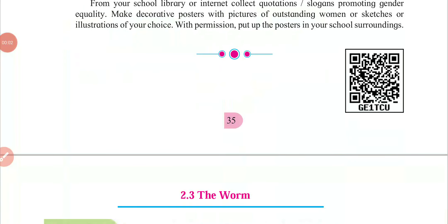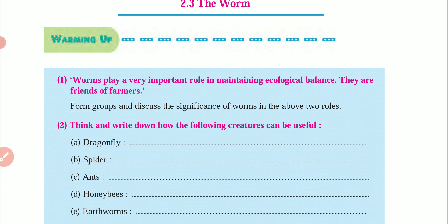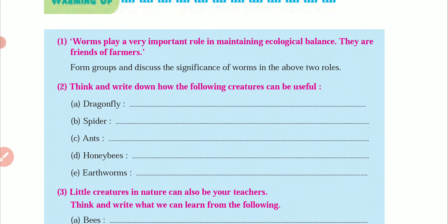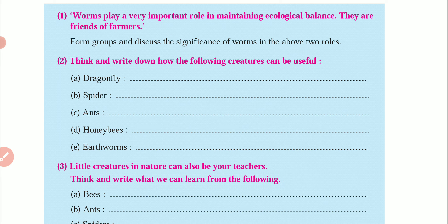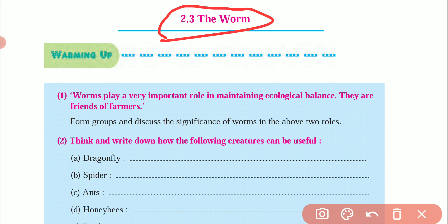Hello students, welcome to Best Education Classes. In today's video we will be learning 8th standard Poem 2.3, 'The Worm'. We'll have a short discussion about the warming up section. From the title, this poem talks about a worm — that worm you can see on the road or in front of your house.